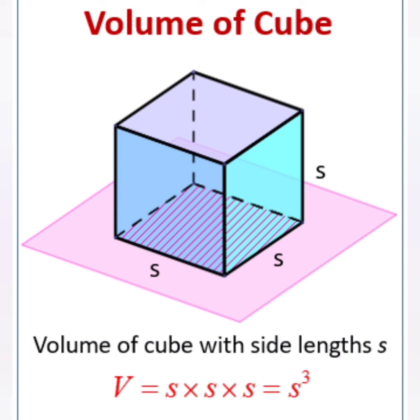Therefore, volume of a cube is equal to s into s into s cubic units. Here we know s is the length of each side of the cube.